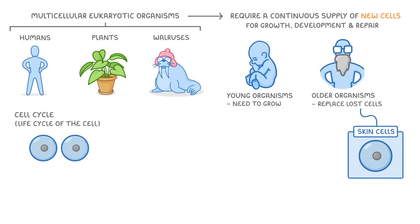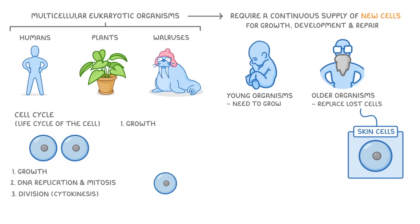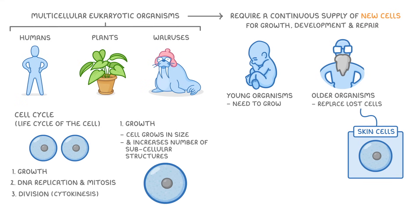Within this cell cycle there are three main stages you need to be aware of: growth, DNA replication and mitosis, and division, also known as cytokinesis. In the first step the cell grows in size, and at the same time increases the number of subcellular structures it contains, such as mitochondria and ribosomes.